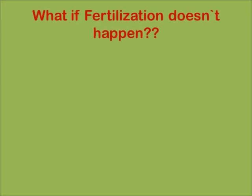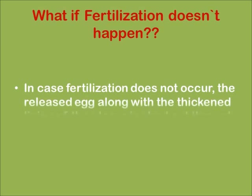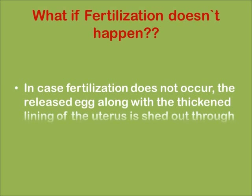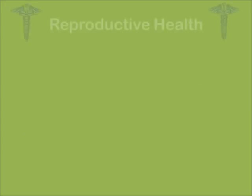What if fertilization doesn't happen? In case fertilization doesn't happen, the egg along with the thickened lining of the uterus is shed out through the vagina in a process called menstruation.